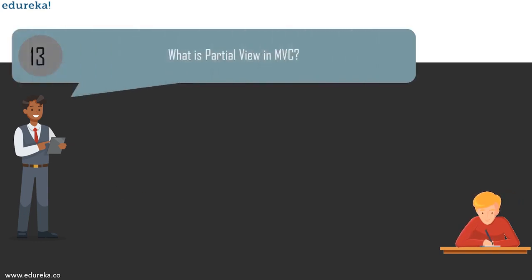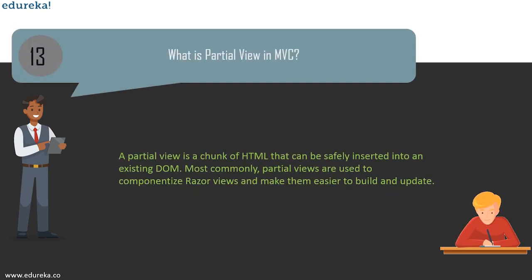The next question is: what is a partial view in MVC? A partial view is a chunk of HTML that can be safely inserted into an existing DOM. Most commonly, partial views are used to componentize Razor views and make them easier to build and update. They can also be returned directly from controller methods. In this case, the browser receives text or HTML content, but not necessarily HTML that makes up an entire page. As a result, if a URL returning a partial view is directly invoked from an address bar, an incomplete page may be displayed.